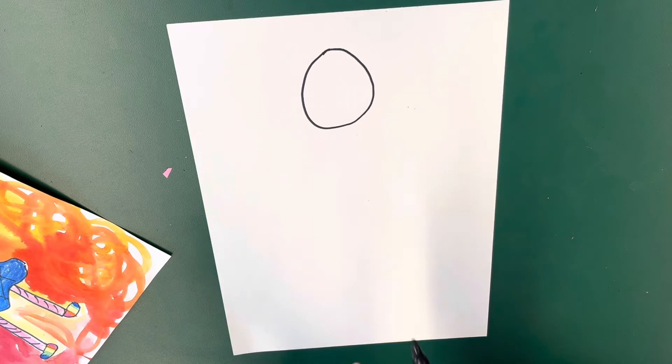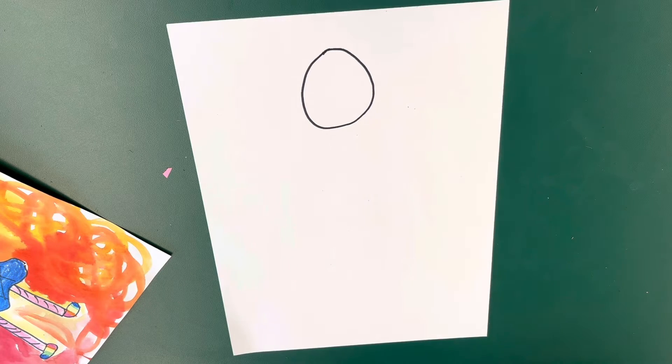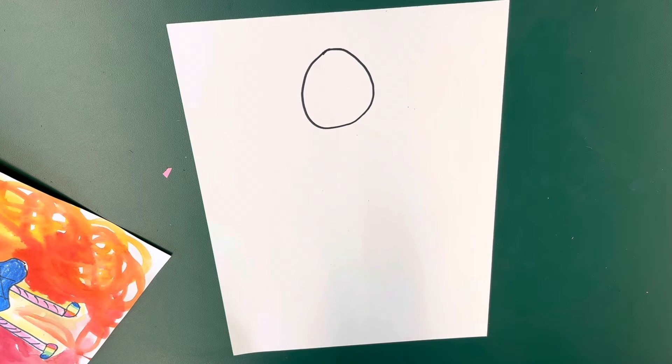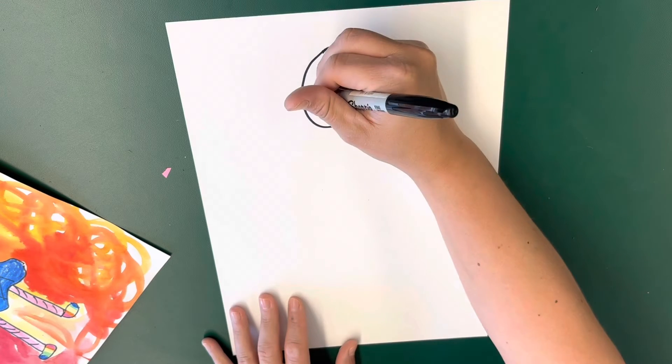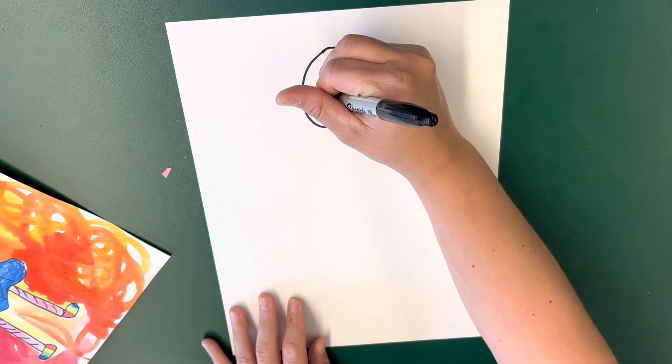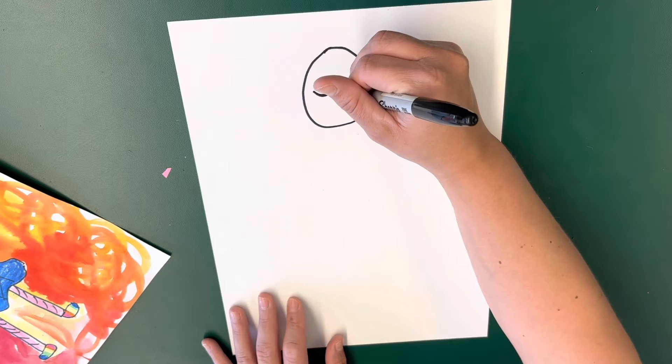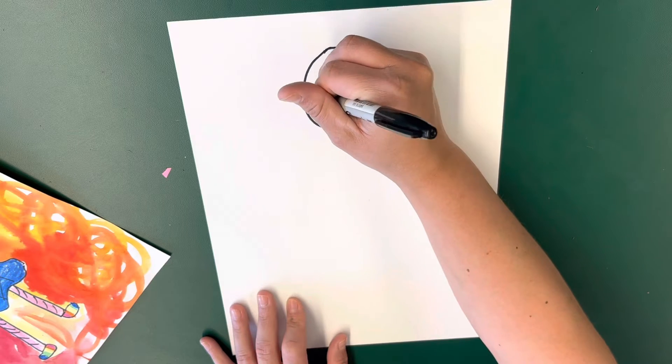We are then going to draw the facial features. Now the hair we're going to save for later so don't draw that yet. The facial features, the eyes—your eyes always fall in the middle of your head. I'm going to do my eyes closed, so in the middle of my head I'm going to do downward curves with little lashes.